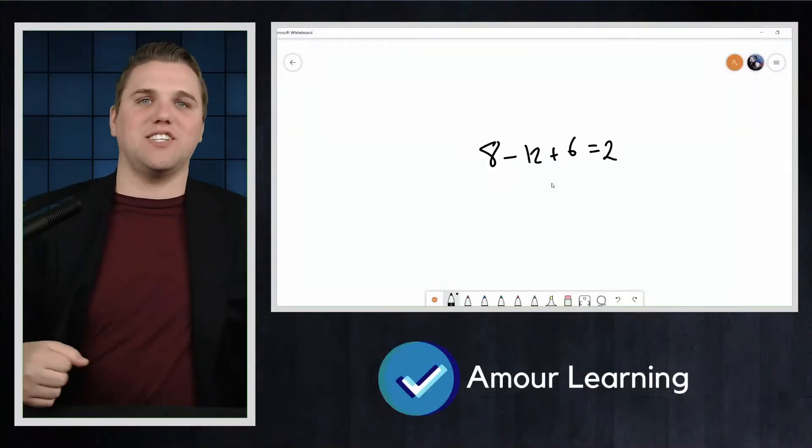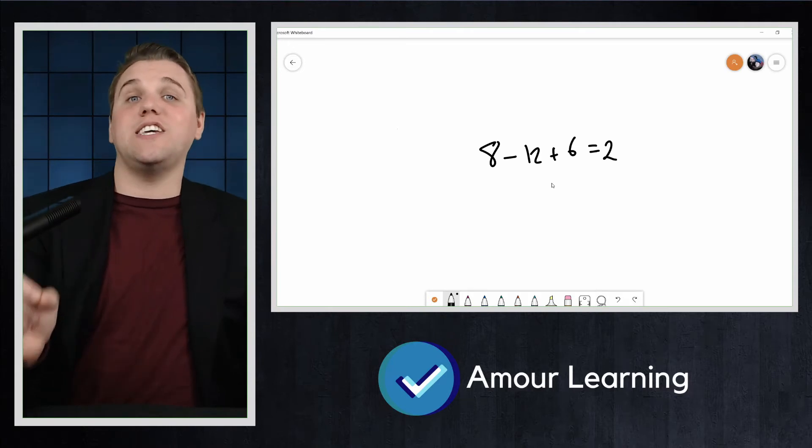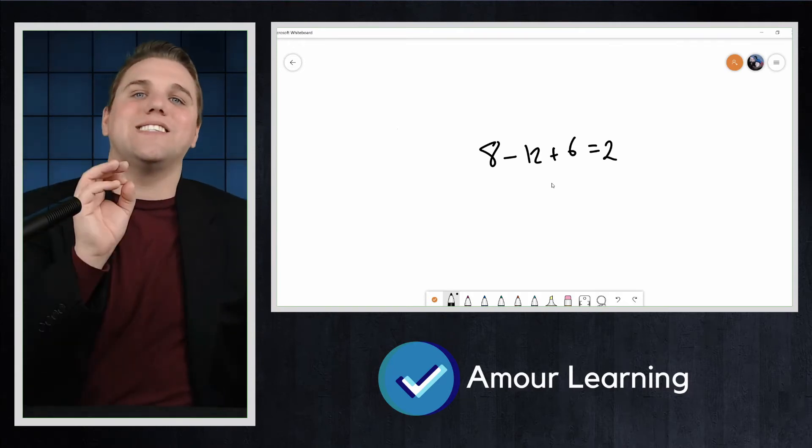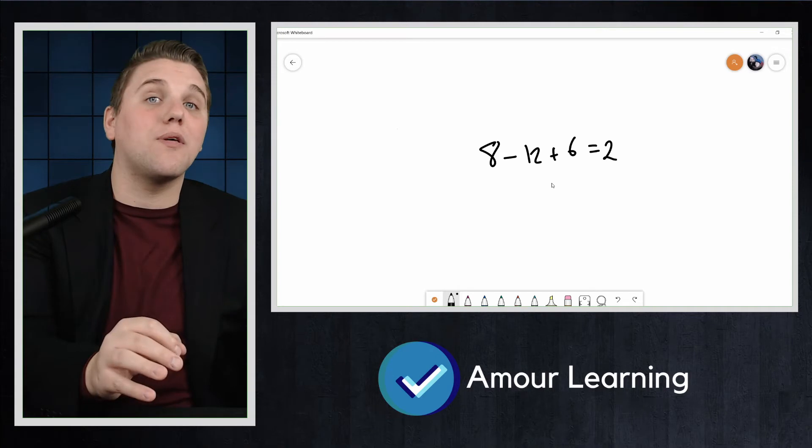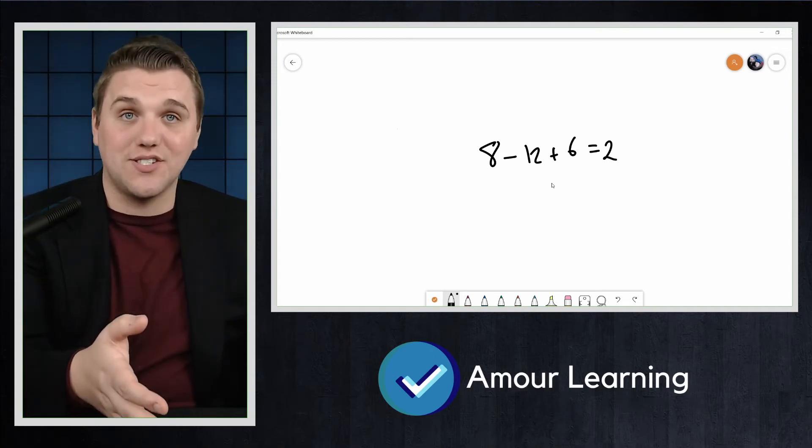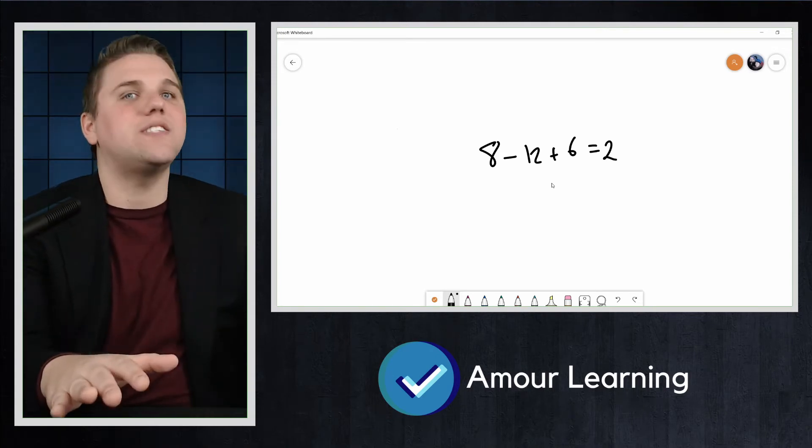Notice that 8 minus 12 plus 6 equals 2. The vertices, edges, and faces of a cube satisfy Euler's formula for planar graphs. This is not a coincidence.